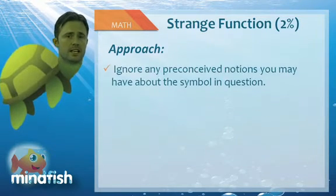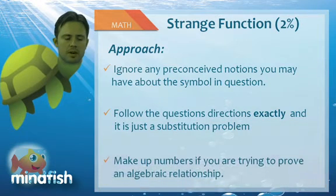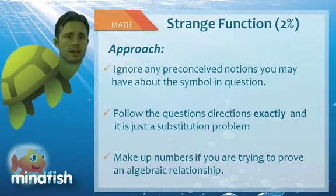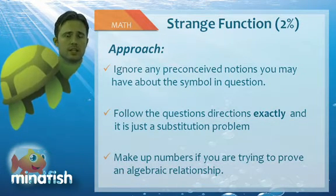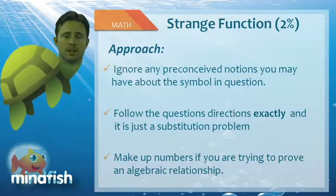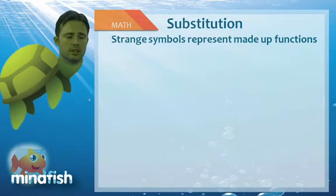They're made up by the SAT, and what we just need to do is follow the directions and substitute in either numbers or letters in exchange for the variables that are already in the strange function. So let's look at how to do this.